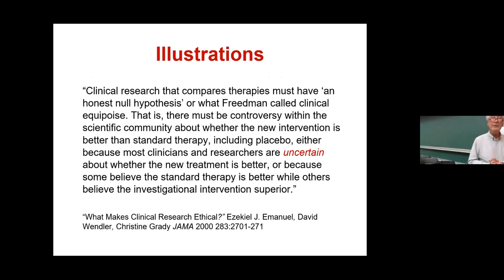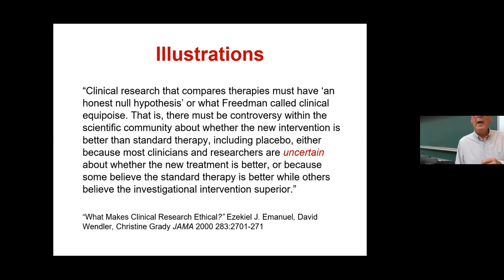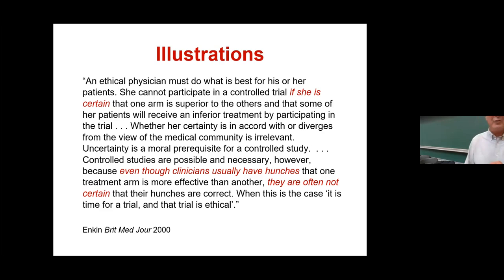There must be controversy within the medical community — either because the researchers are uncertain or because they disagree. Some argue the individual doctor's uncertainty is what matters: the doctor can't do a trial if they're not equipoised, regardless of the community. But this line of argument ends up saying you can still have placebo-controlled studies because even though you have a hunch that one treatment arm is better than another, you're often not certain — and not being certain is taken to be enough.